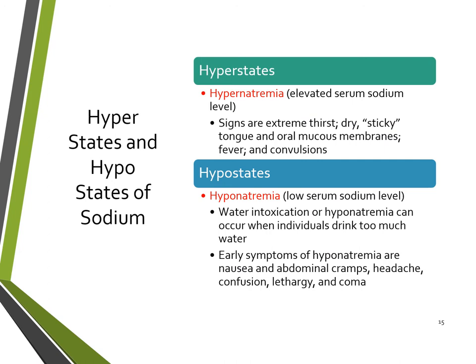Hypernatremia is elevated serum sodium levels. Symptoms include extreme thirst, a dry or sticky tongue, and dry oral mucous membranes, with fevers and convulsions in very severe cases. Hyponatremia is low serum sodium levels, and water intoxication or hyponatremia can occur when individuals drink too much water. Early symptoms of hyponatremia are nausea and abdominal cramps, headache, confusion, lethargy, and coma.